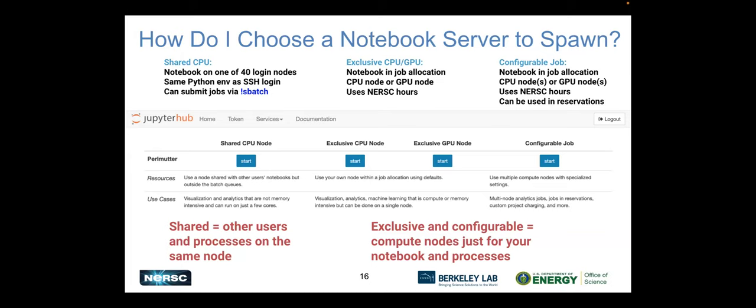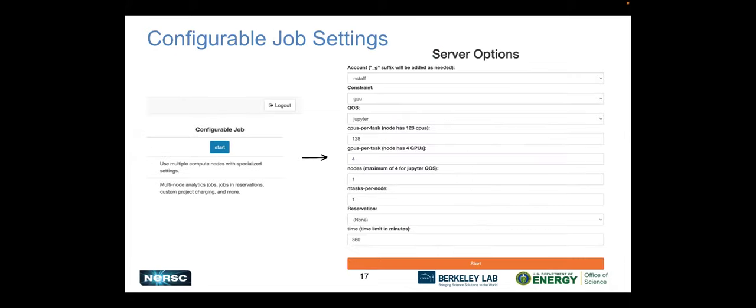The two middle buttons are preset defaults to start a job quickly. If you need something more finely tuned, there's the configurable job button on the right. When you click that, you get a page with dropdown options to pick from. You can use multiple nodes through this option — two, three, or four nodes — while the other two batch job types use just one node by default.